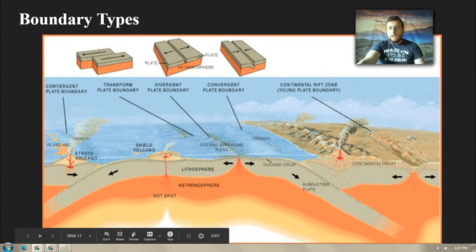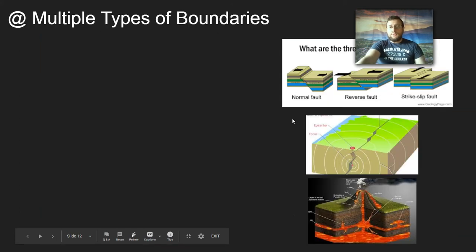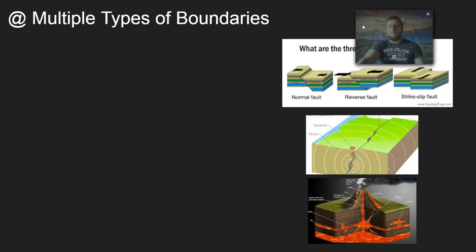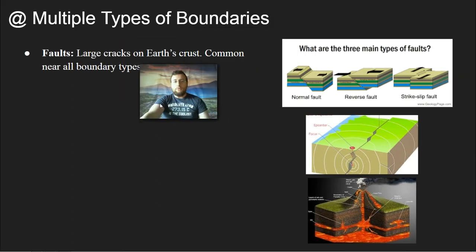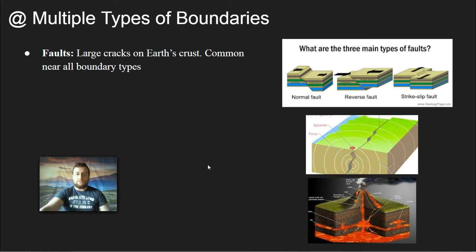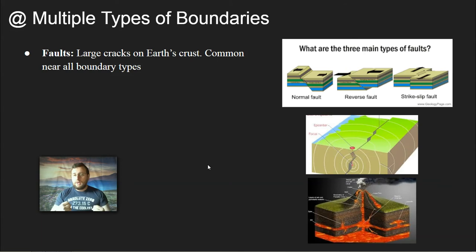Each of these boundary types will have specific structures that you should be able to recognize and know when and why they show up. There are features that show up in every type of boundary, and the first one I'm going to talk about is faults. Faults are basically large cracks in the Earth's surface. Whenever you have large pieces of Earth's crust moving towards, away, or past each other, you're going to get rocks stuck to each other, tension, and rocks cracking — that is what causes faults.